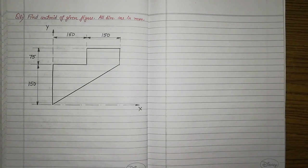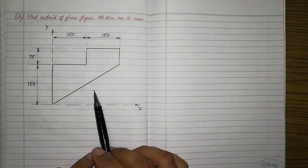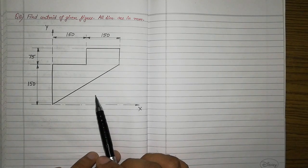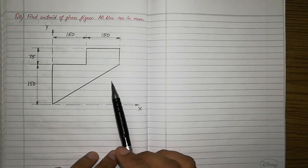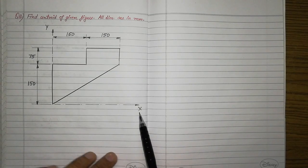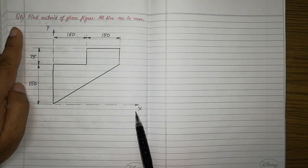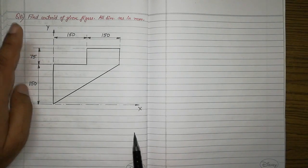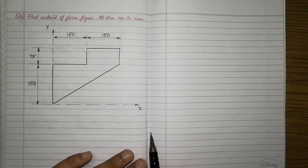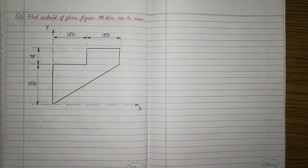Hello students, today I will take the 8th problem on the centroid topic. We have an unsymmetrical composite area and we have to find its centroid. All dimensions are in mm. The x-axis and y-axis are given to us, so we have to give the coordinates of the centroid with respect to these two axes only.